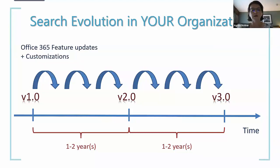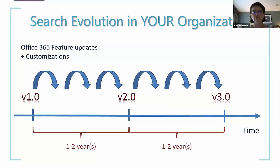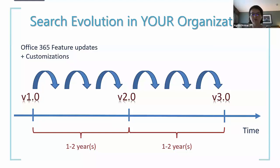This approach is also easier for budgeting. In many cases with my clients, their budget allocates resources for search for a specific amount of time, like six months, because they consider search a one-time project. After that, search is left alone and nobody improves it anymore. However, with all those changes, your environment changes, content changes, and user needs change. You definitely need a more agile approach. It's much easier to get a budget for each version this way.